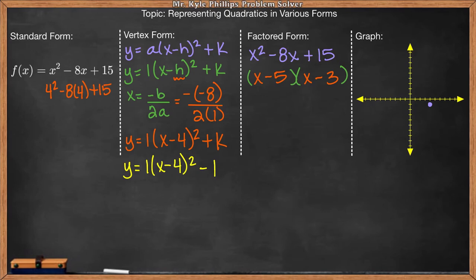And then I have zeros at 5 and 3. So when you're given the factors, the way you find the zeros is you set each factor equal to zero. So this would be x minus 5 equals zero and x minus 3 equals zero. And when I solve, I get x equals 5 and x equals 3. These are zeros, which means that's where the parabola is going to cross the x axis. So I cross at 5 and I cross at 3.